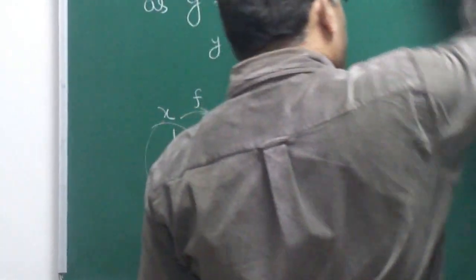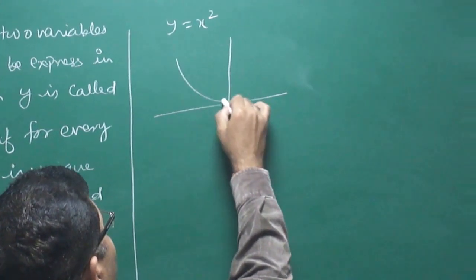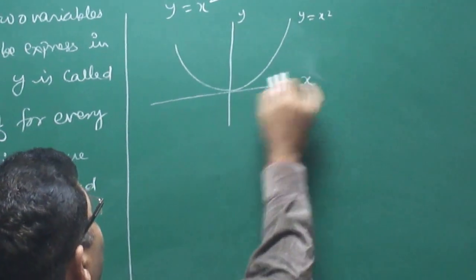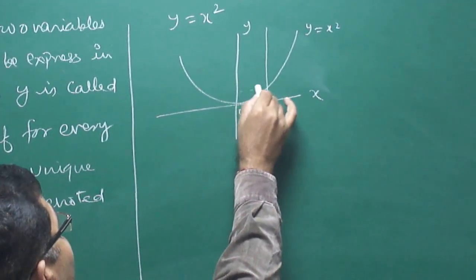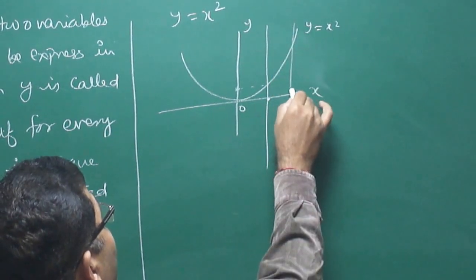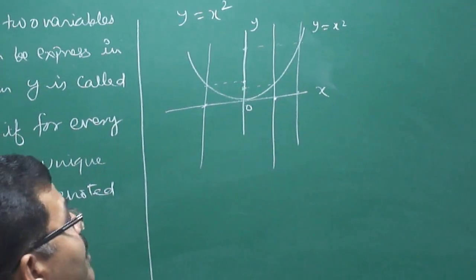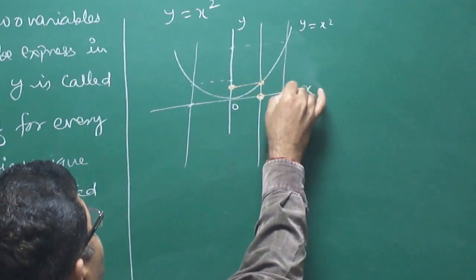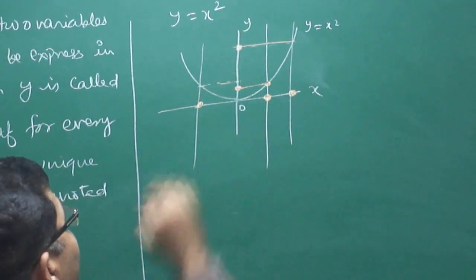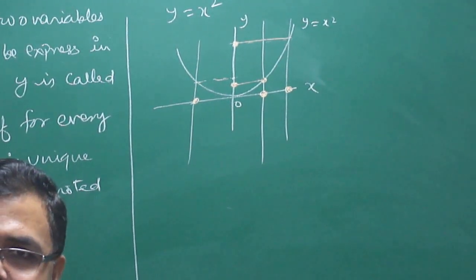As an example, take y equals x squared — you know this is a parabola. If we plot this graph, y equals x squared looks like a parabola. Now if we draw a line parallel to the y-axis, for any value of x, what value of y do we get? We get only one value. So for every value of x, if we draw a line parallel to the y-axis, it will intersect at one and only one point.